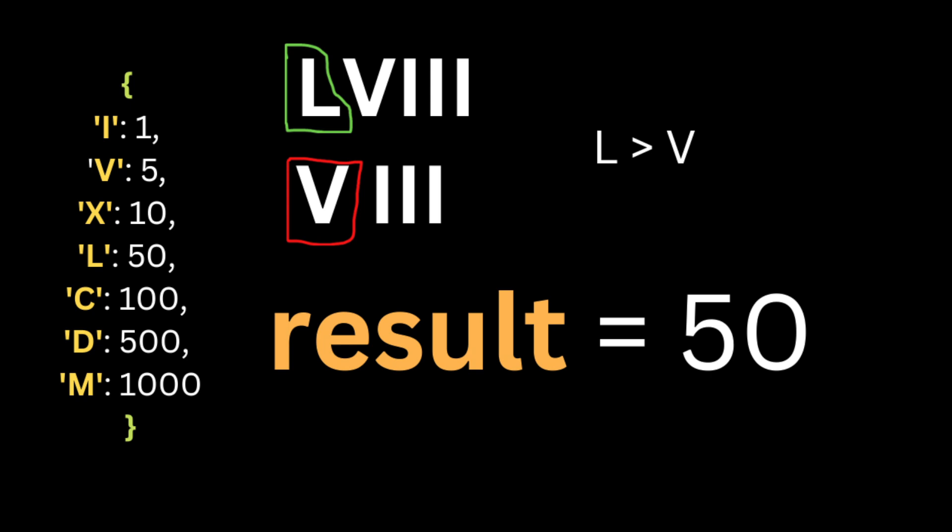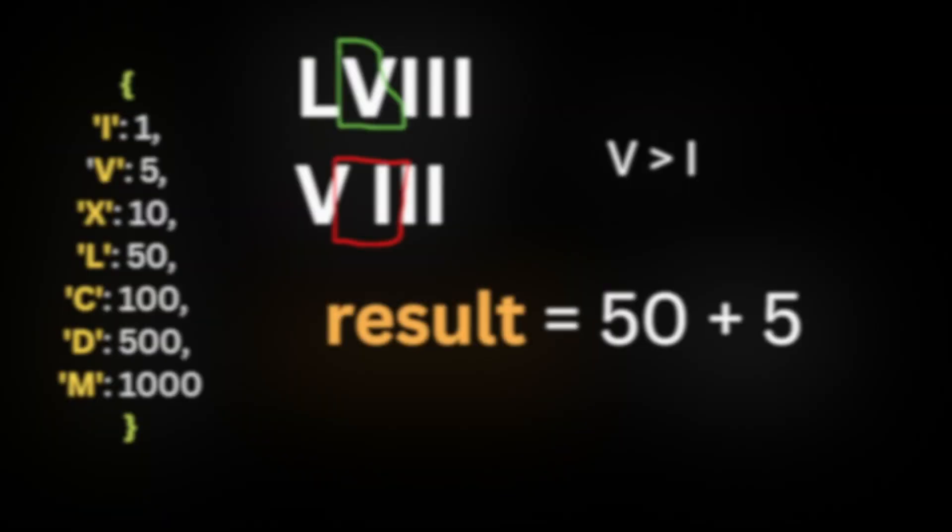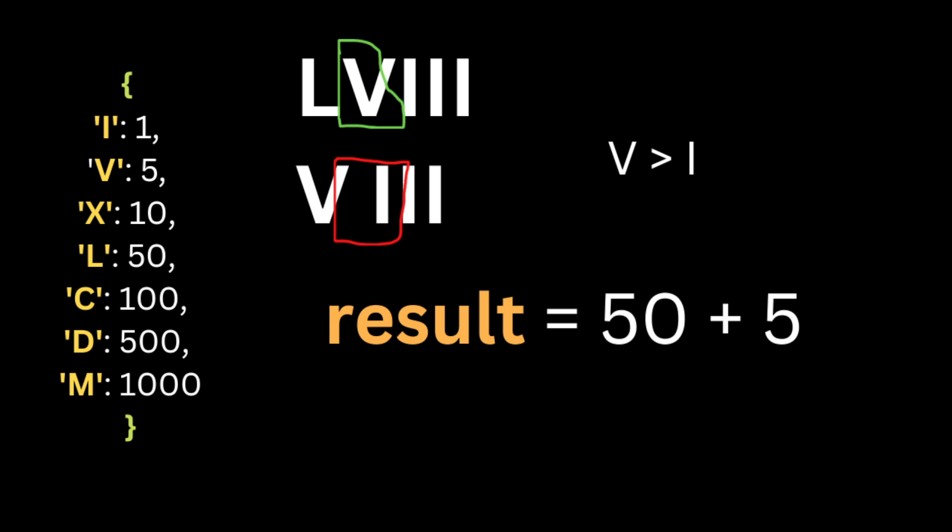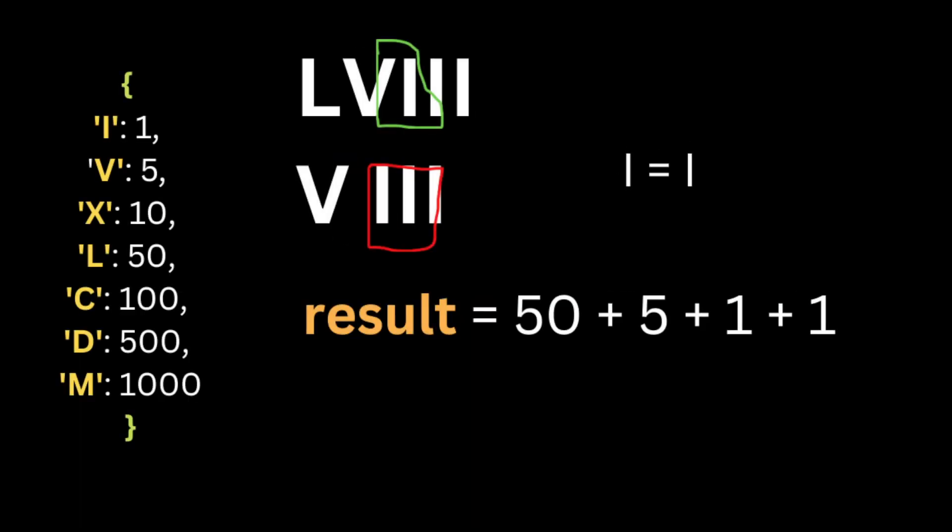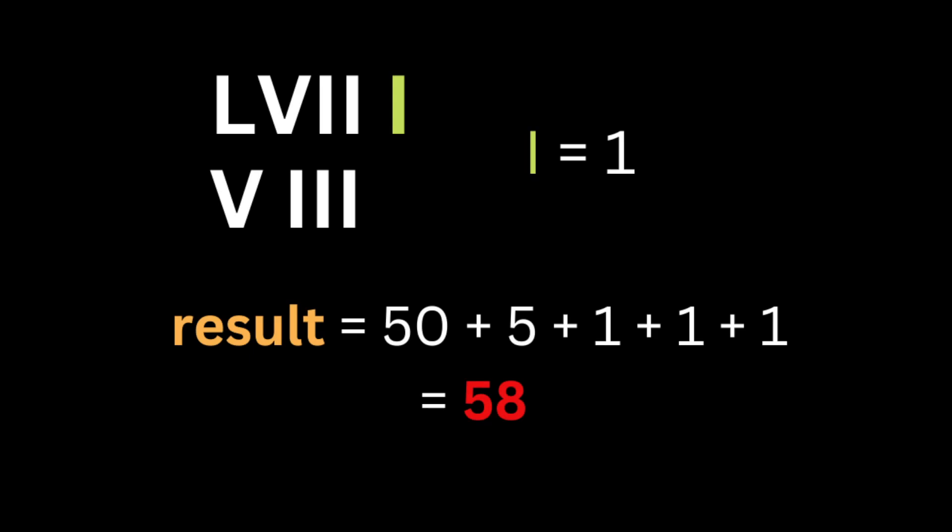The result decreases by the current value if it's less than the next value, and that's the exception that I was trying to explain to you using the examples 4 and 9. Otherwise, we add the current value to the result. And at the end, we return the result plus the last symbol in the input string, because we are using the zip function and we will always have one value that will not be reached at the end.